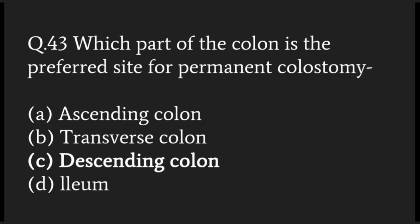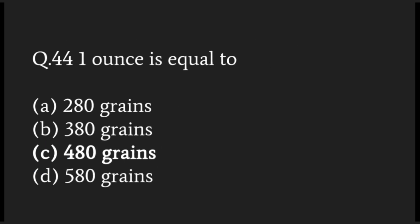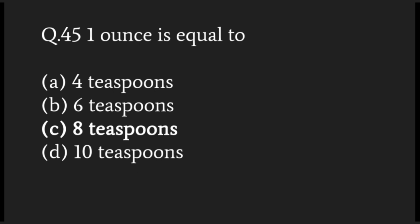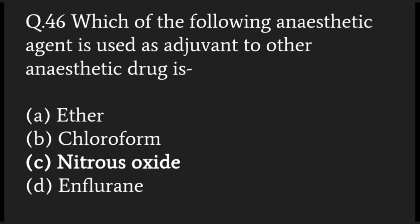The preferred site for a permanent colostomy is the descending colon. One ounce is equal to 480 grains, and also equal to 8 tablespoons. The anesthetic agent used as an adjuvant to other anesthetic drugs is nitrous oxide.